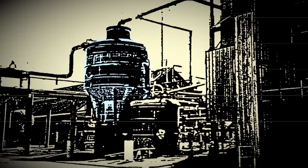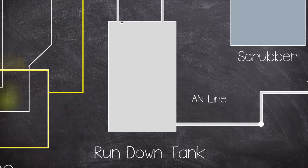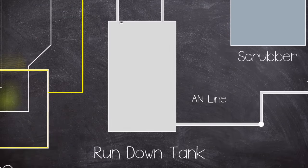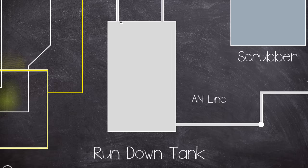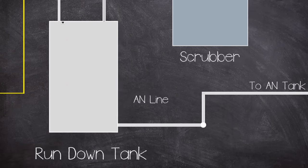The neutralizer was constructed of stainless steel. The juicy ammonium nitrate overflowed off the neutralizer into a rundown tank. This acted as a surge vessel for the neutralizer before the ammonium nitrate is pumped to the storage tank farm.